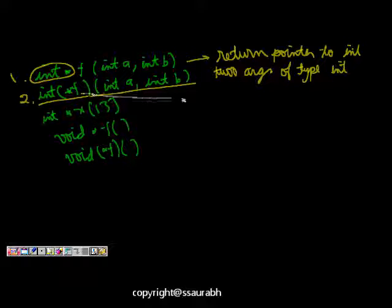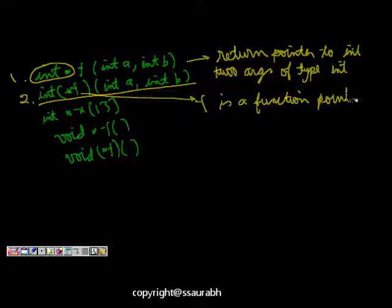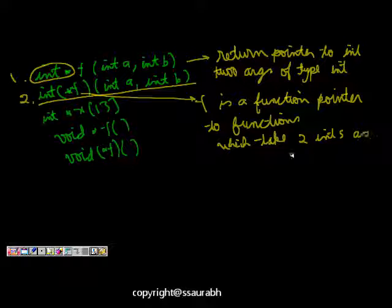Where now this f is a function pointer. It is a function pointer to functions which take two int as argument and return int.